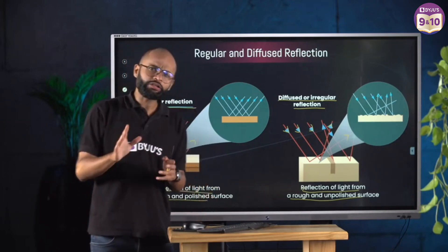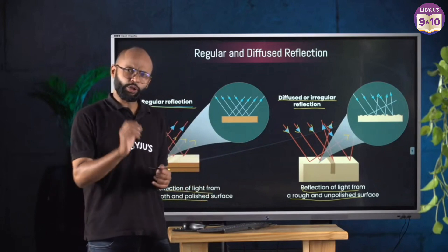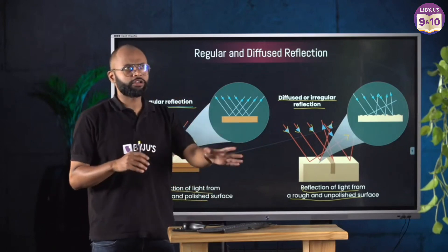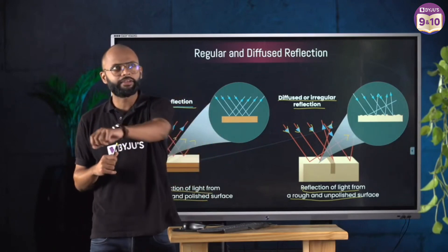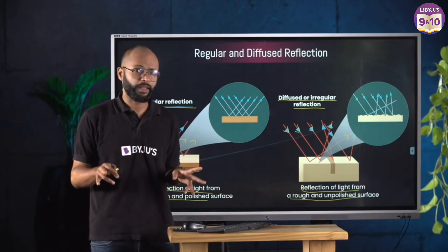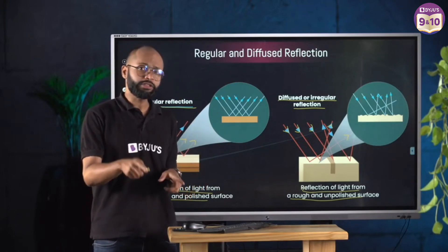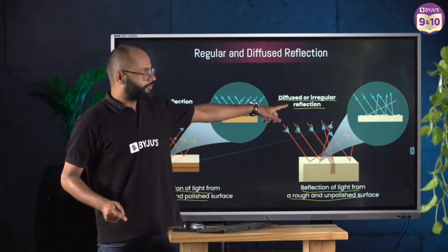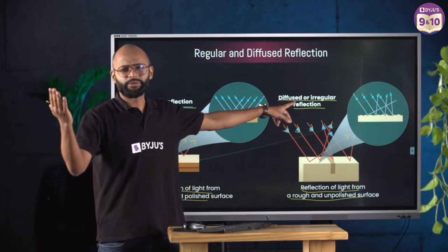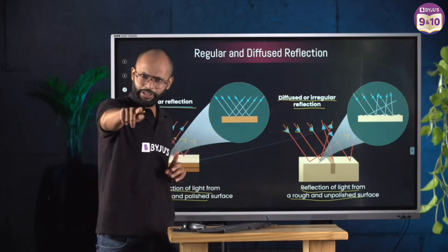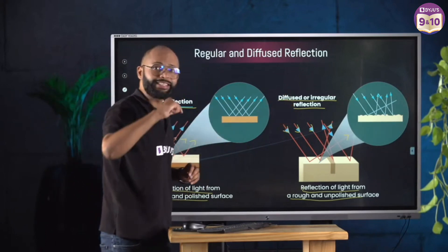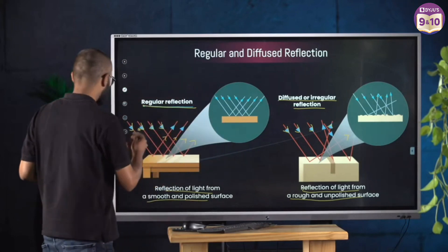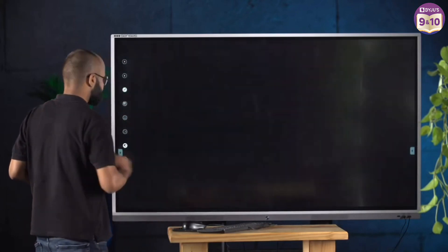Think about it — in the laws of reflection, did you ever see the phrase 'laws of regular reflection'? No — it was just the laws of reflection. So even in diffused reflection, whatever happens, it is still reflection and it follows the laws of reflection. Let's see how.